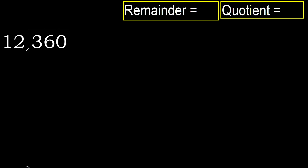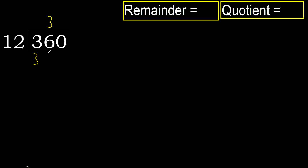360 divided by 12. 3 is less, therefore look at 36. 36 is not less. 12 multiplied by which number is nearest to 36 but not greater? 12 multiplied by 4 is 48, which is greater. Multiply by 3: 36 is not greater. So we use 3.